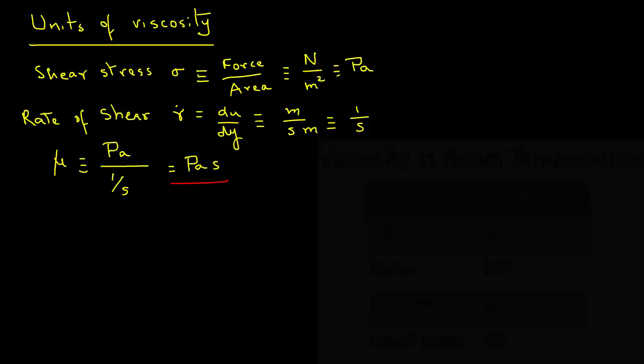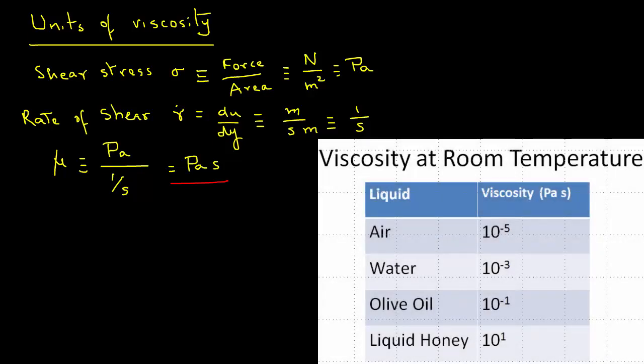We can look at some values of different types of fluids. Viscosity of air is very small, 10 raised to the power minus 5 Pascal second. Viscosity of water is 10 raised to the power minus 3. Viscosity of olive oil is 10 raised to the power minus 1. And viscosity of honey is 10 raised to the power 1. So we have quite a variation of viscosities of Newtonian fluids that tells us something about the flow behavior characteristics.